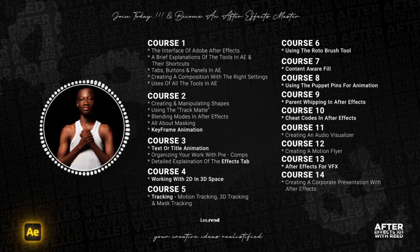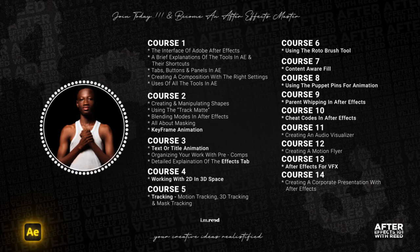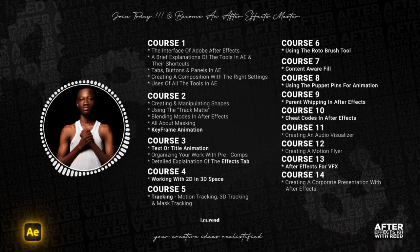Session four is working with 2D in 3D space. Five is tracking — that's motion tracking, 3D tracking, and mask tracking. Six will be learning how to use the Rotobrush tool. Seven is the Content-Aware Fill. Eight is the puppet pins for animation. Nine is the parenting in After Effects. Ten is cheat codes in After Effects. Eleven is how to create an audio visualizer. Twelve is designing and creating a motion flyer. Thirteen is how to use After Effects for VFX. And fourteen is creating a corporate presentation with After Effects.